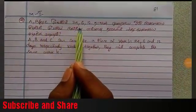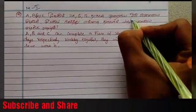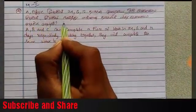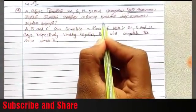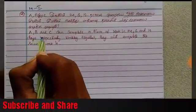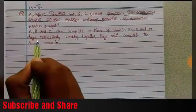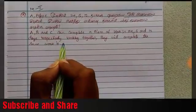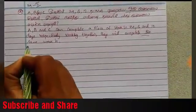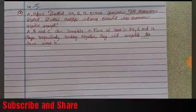Model 2: A, B, and C can complete a piece of work in 24, 6, and 12 days respectively. Working together, they will complete the same work in how many days?